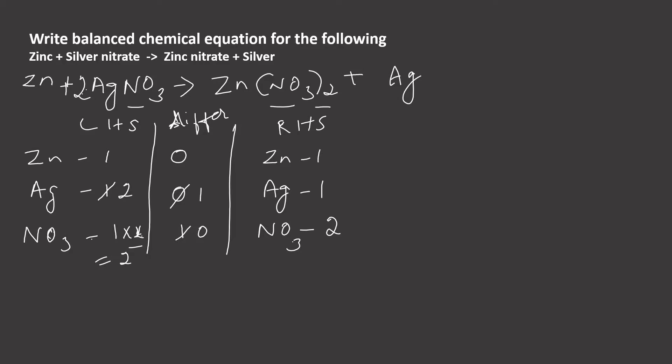To make it into 0, in the right-hand side of the silver we need to multiply with 2. So this 2 as a coefficient in front of silver we have to put. Now, find the difference 2 minus 2, again 0.